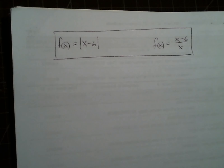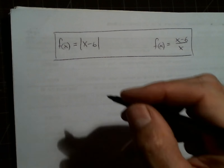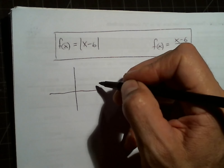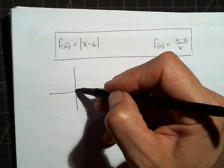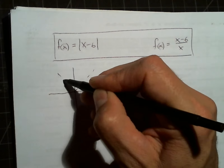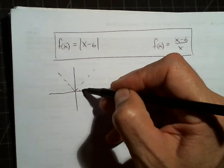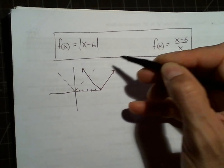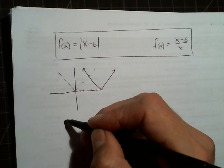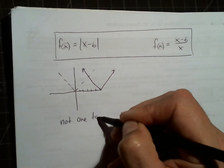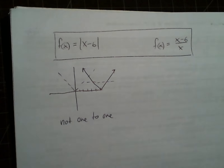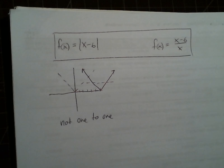You try these — pause the video and check your work when you're done. Let's check if this has an inverse function. It's an absolute value shifted to the right, and we can see it is not one-to-one because it fails the horizontal line test. So its inverse is not a function.